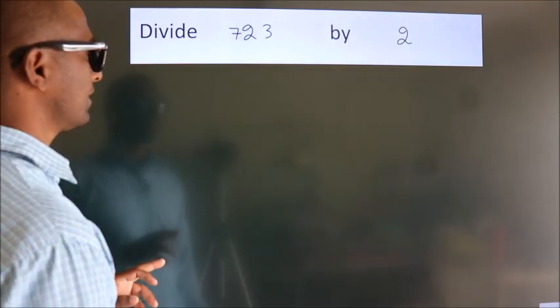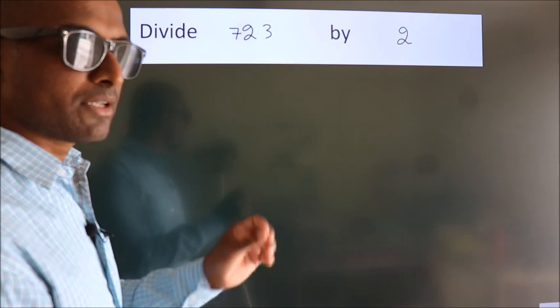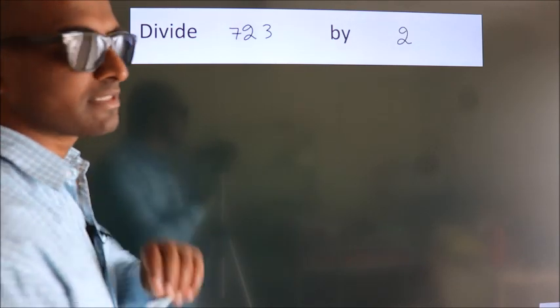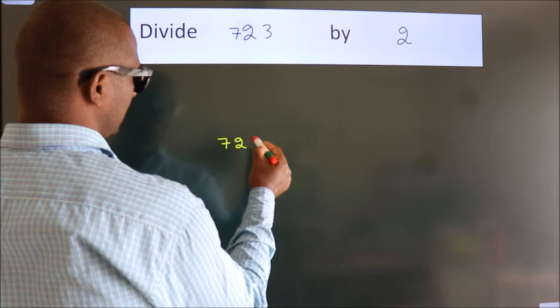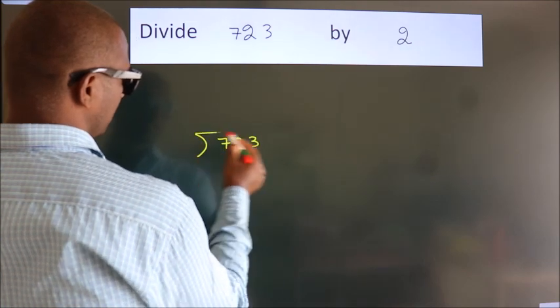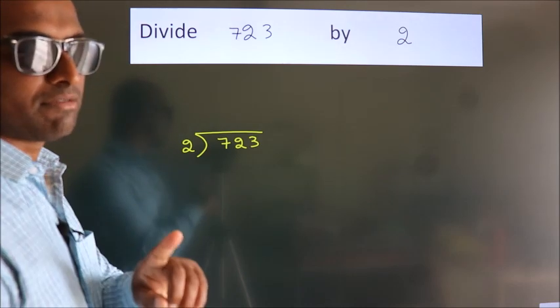Divide 723 by 2. To do this division, we should frame it in this way: 723 here, 2 here. This is step 1.